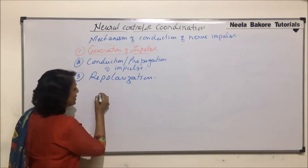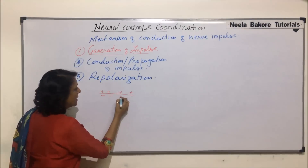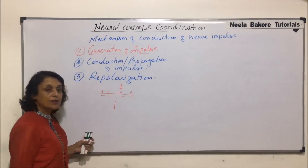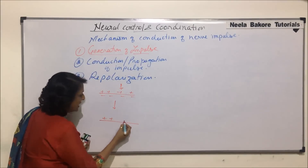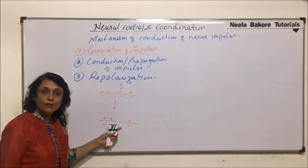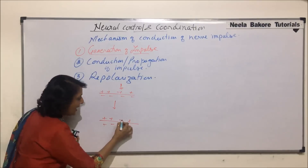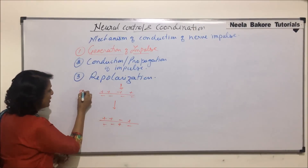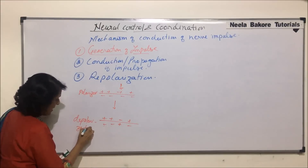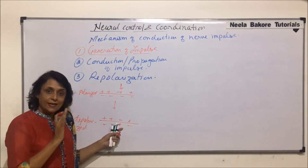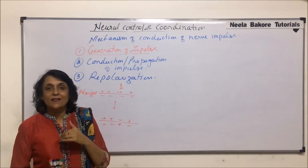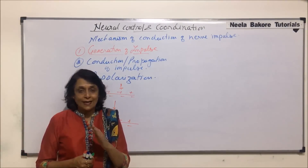What happened in the first stage? Normal membrane: electropositive on the outer side, electronegative on the inner side. When it receives a stimulus, in this region the permeability of the membrane changes — sodium ions move in and it becomes depolarized. So this region is polarized and this is depolarized. Now this membrane is going to become polarized again.